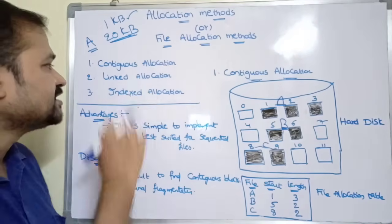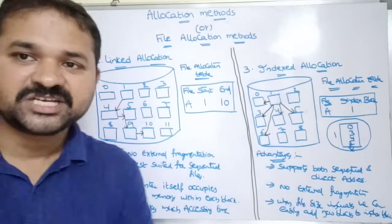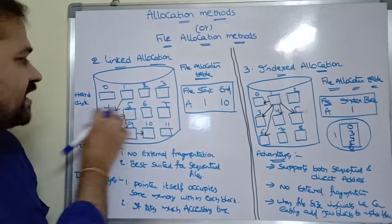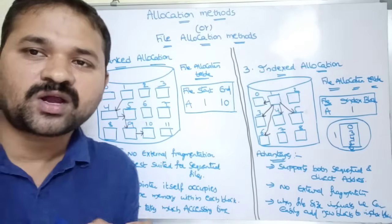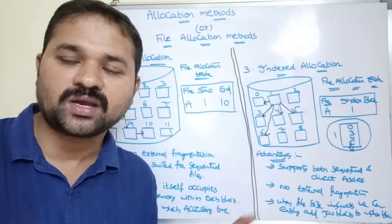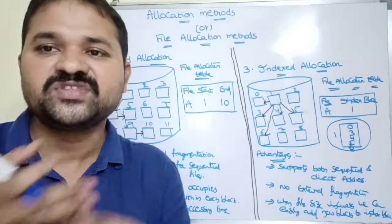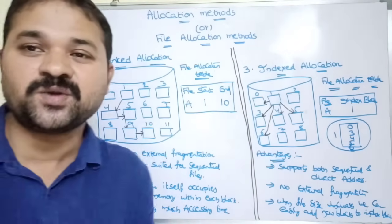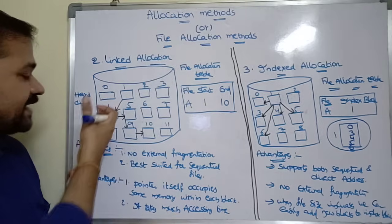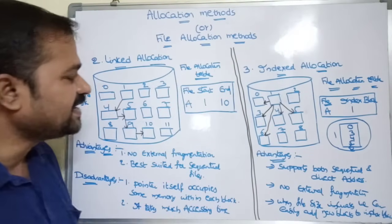To overcome these problems we use the second approach: linked allocation. It is based upon the linked list — we have a collection of blocks where each block contains a pointer field. The first block's pointer contains the address of the second block, the second block's pointer contains the address of the third block, and so on. This approach is based upon individual blocks. The hard disk here has 12 blocks from 0 to 11.